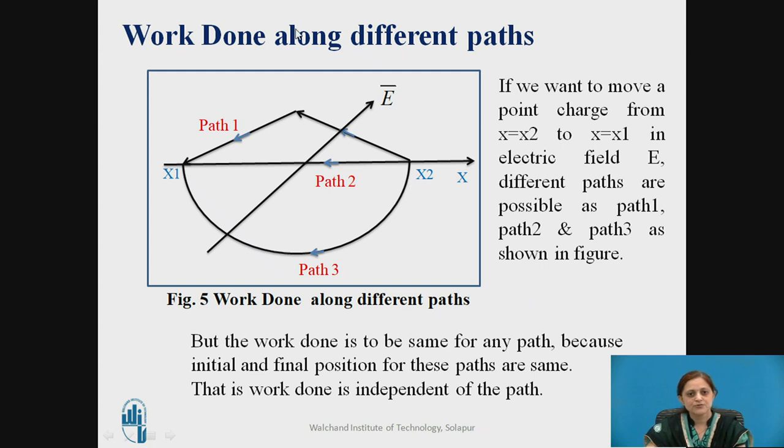Now the next bit is work done along different paths. Suppose on X axis two points are given X1 and X2 and if we want to move the point charge from X2 position to X1 position in electric field E bar, different paths are possible to travel from X2 to X1 as shown in figure. So different paths are given as path 1, path 2 and path 3. But the work done is to be same for any path because the initial position and the final position for these paths are same. That is work done is independent of the path.